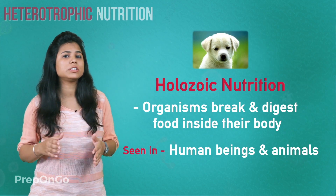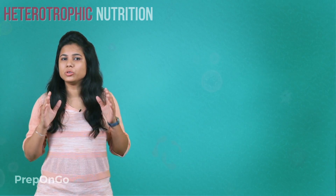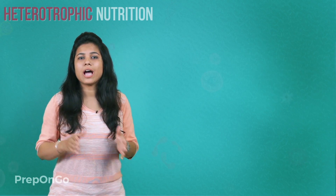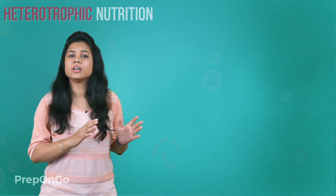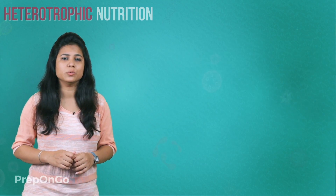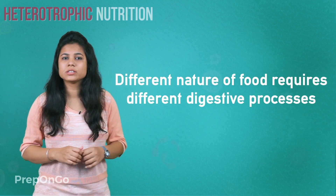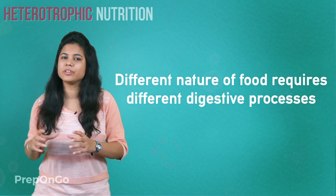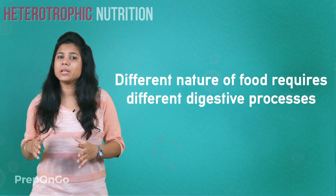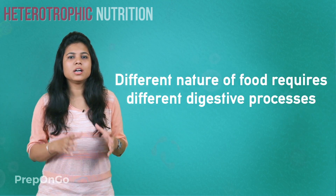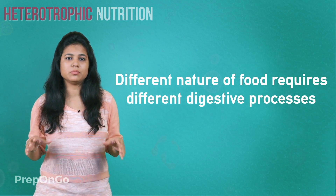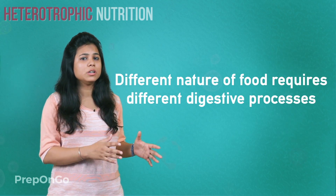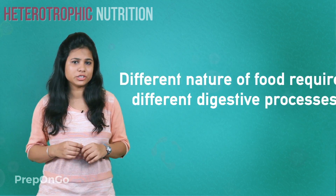We can also see that animals and humans do not follow the same digestion process, which means a cow and a human do not have the same digestive system. This is because humans have a different type of food and cows or animals have a different type of food. If you compare a cow and a tiger, they also have different digestive systems because of different food types. So different food can classify organisms as having a different digestion process.